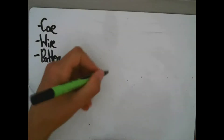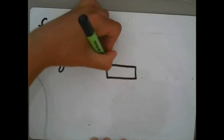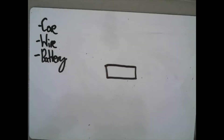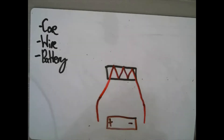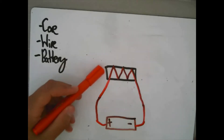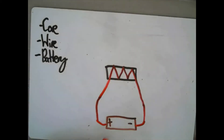We need three things: a battery, which is the source of the current; a wire to coil around; and a core. For the core you can use a magnetic material such as iron or steel. So we've got the core, the wire which is wrapped around the core, and the battery.